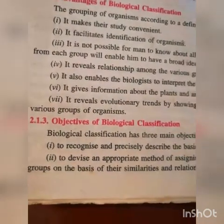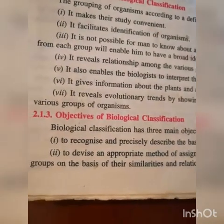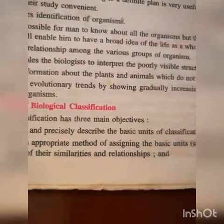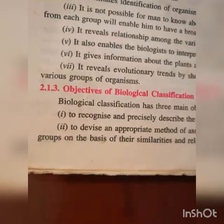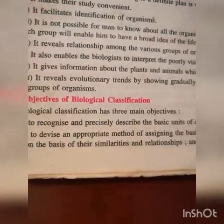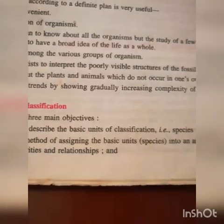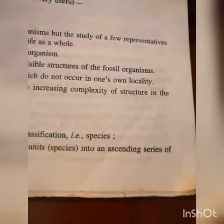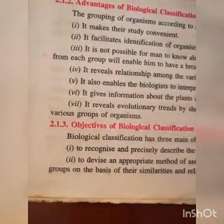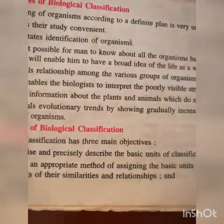The objectives of biological classification: Biological classification has three main objectives. The first is to recognize and precisely describe the basic unit of classification, that is species. The second is to devise an appropriate method of assigning these basic units — species — into an ascending series of groups on the basis of their similarities and relationships.